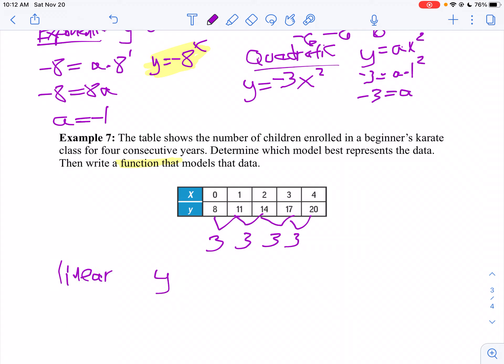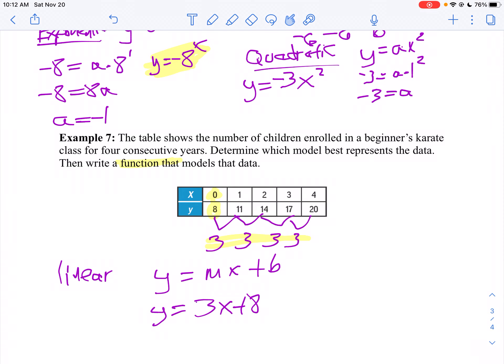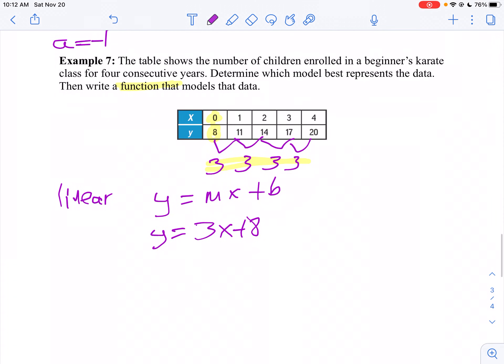So linear is y equals mx plus b. My slope is 3 because we just found that. My y-intercept is when x is 0, so my y-intercept is 8. So y equals 3x plus 8. And we're just going to write it in function notation, so I'm going to say f(x) equals 3x plus 8. That's the only thing we do different on this problem.